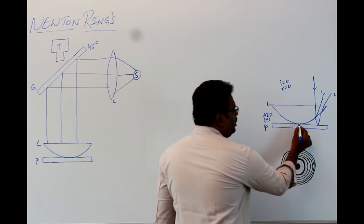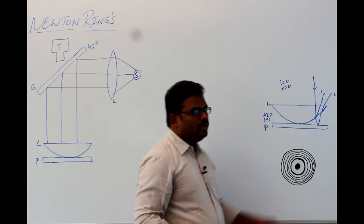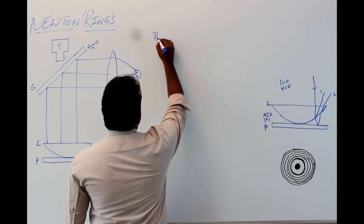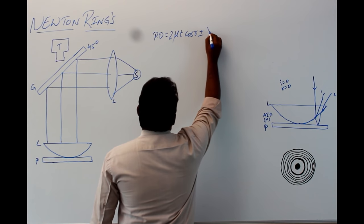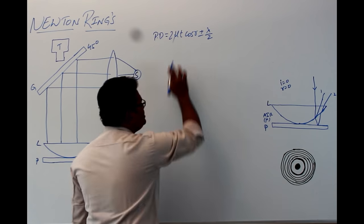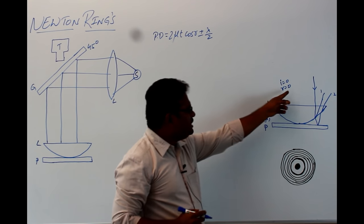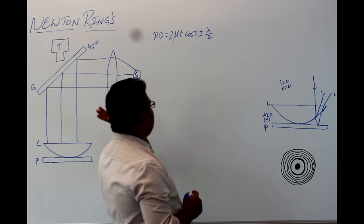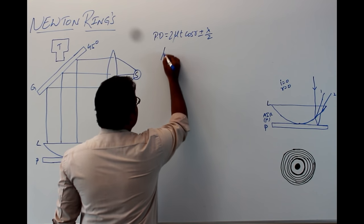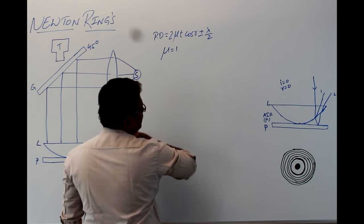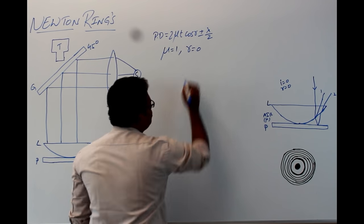The path difference between the two light rays reflecting from the thin film is 2μt·cos(r) ± λ/2, where μ is the refractive index of the thin film, t is the thickness of the thin film, r is the angle of refraction which is 0, and λ/2 accounts for the phase change. For Newton's rings, the thin film is formed by air, so μ equals 1, and angle of refraction r is also 0 because this is normal incidence.